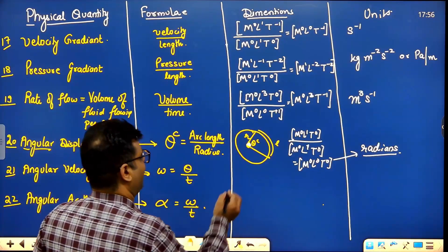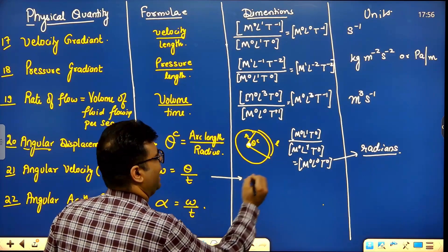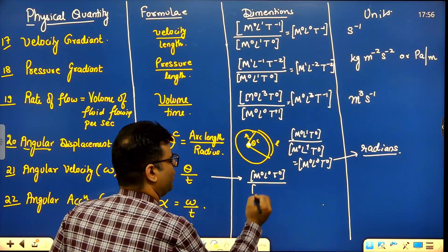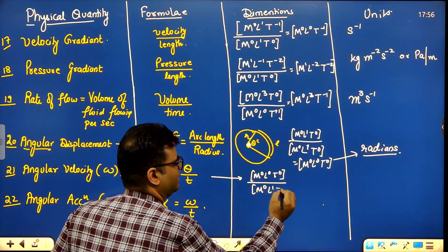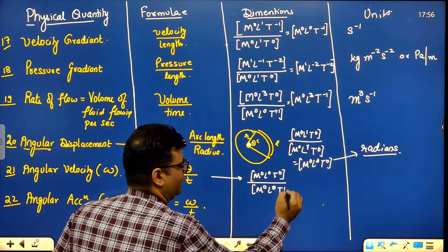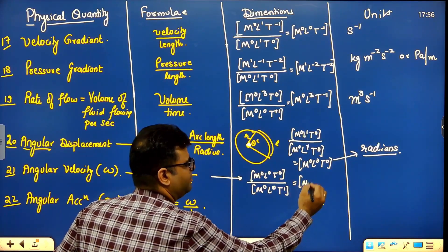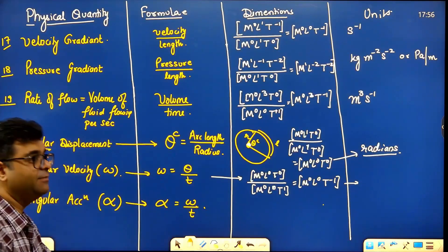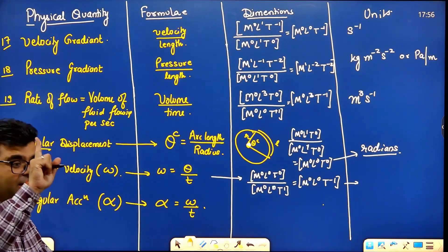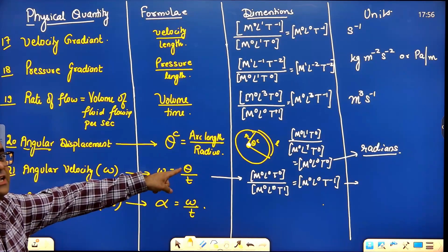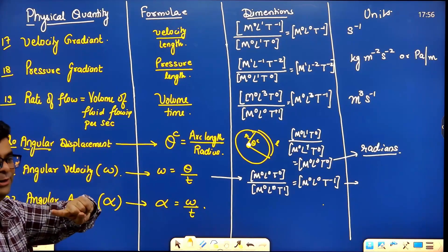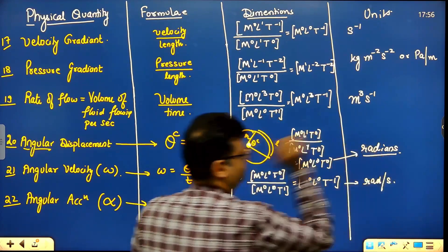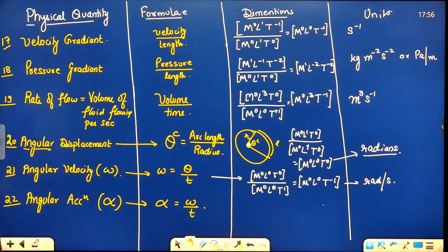Angular velocity = angle upon time. Angle dimensions are M⁰L⁰T⁰, time is M⁰L⁰T¹. Dividing: M⁰L⁰T⁻¹. The units are radian per second (rad/s), since angle carries the supplementary unit radian.